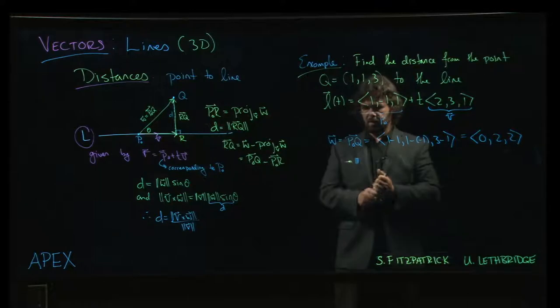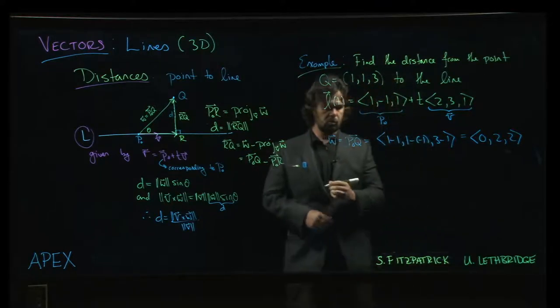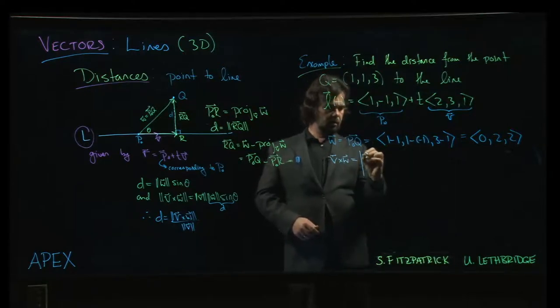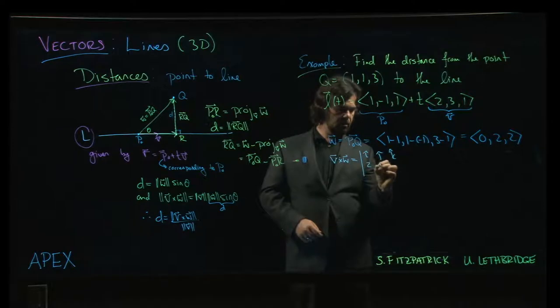Now if we want to use the formula here, next thing I guess we need to do is compute the cross product. So v cross w. We'll do the old i, j, k trick. Components of v, 2, 3, 1, 0, 2, 2.